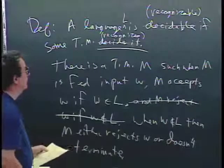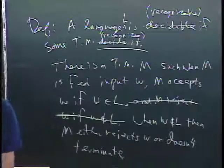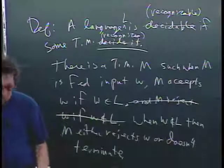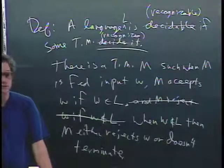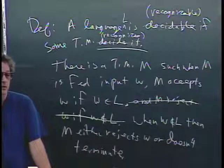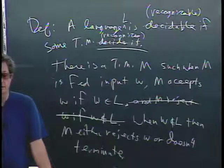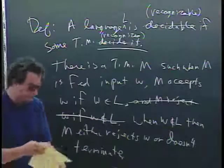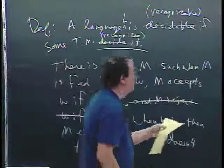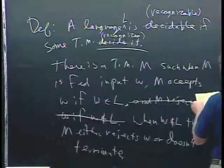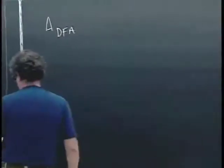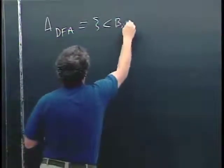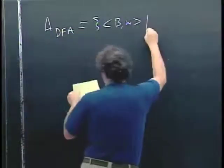Now I want to define some languages that are decidable and show that they're decidable. And then later — the high point — will be proving that there are languages that are not decidable; not only proving their existence but actually exhibiting specific languages and proving those languages are undecidable. But we're going to start out with languages related to DFAs, which will also introduce a new viewpoint necessary for proving undecidability.